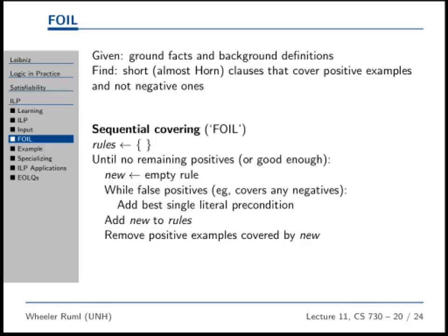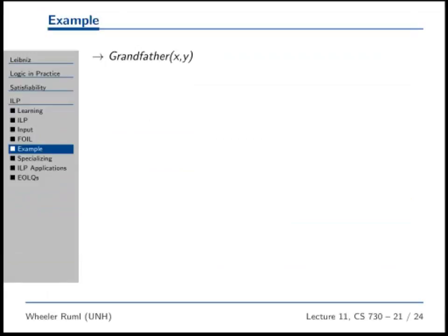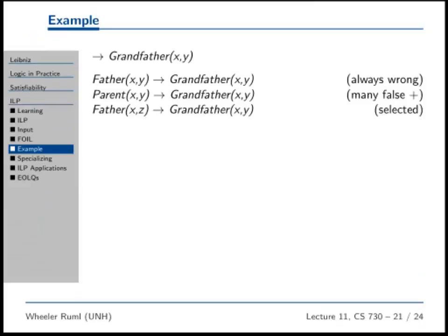We start with the empty rule and then each time through we're going to elaborate on the rule. We're going to add another literal to the rule. I think we start off saying everybody's a grandparent of everybody for every rule. Then we constrain the rule by saying well okay not everybody's a grandparent just the people that are fathers are grandparents. So we're doing local search in hypothesis space.